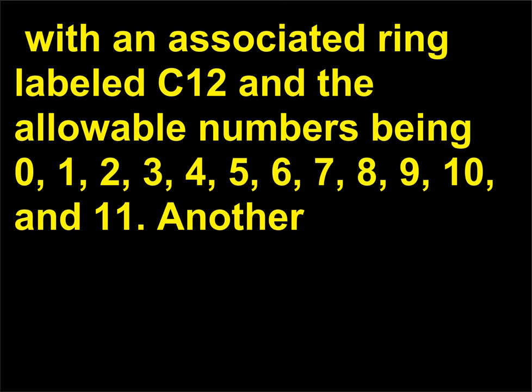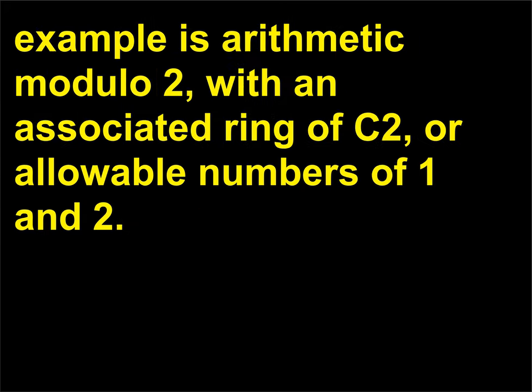Another example is arithmetic modulo 2, with an associated ring of C2, or allowable numbers of 0 and 1.